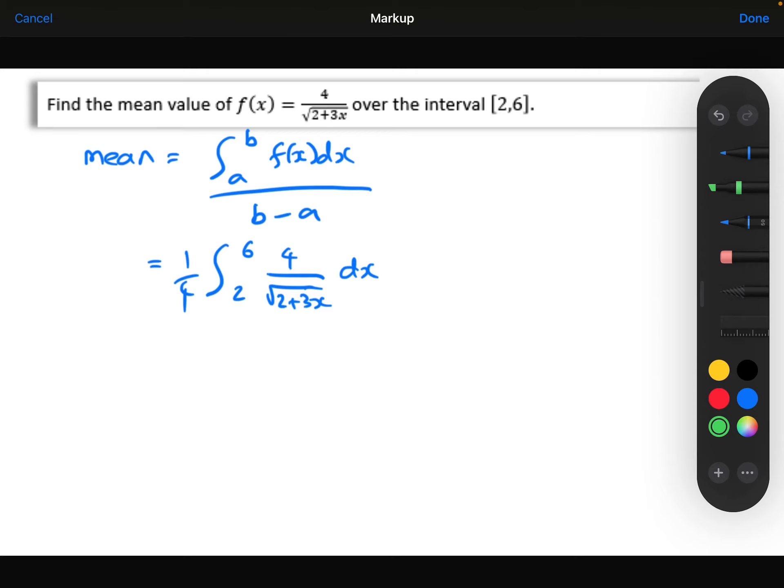Which, while I'm at it, I notice if I take this 4 outside the integral, they're going to cancel nicely to just leave me with 1. In order to integrate that, let me rewrite that as a power. So the square root on the bottom there will be a power of half. So I can rewrite that then as 2 plus 3x to the power of minus 1 half.